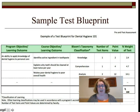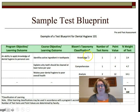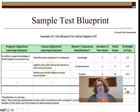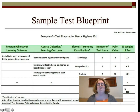Here's an example of a sample test blueprint. You can see the learning objective, the level of thinking required, the number of test items, and the point value — the percent weight of the test. Each learning outcome has a taxonomy classification and a number of test items. You could also include the type of items and how many of each item type per objective. We need to be systematic in how we develop tests, and a blueprint makes that easier.